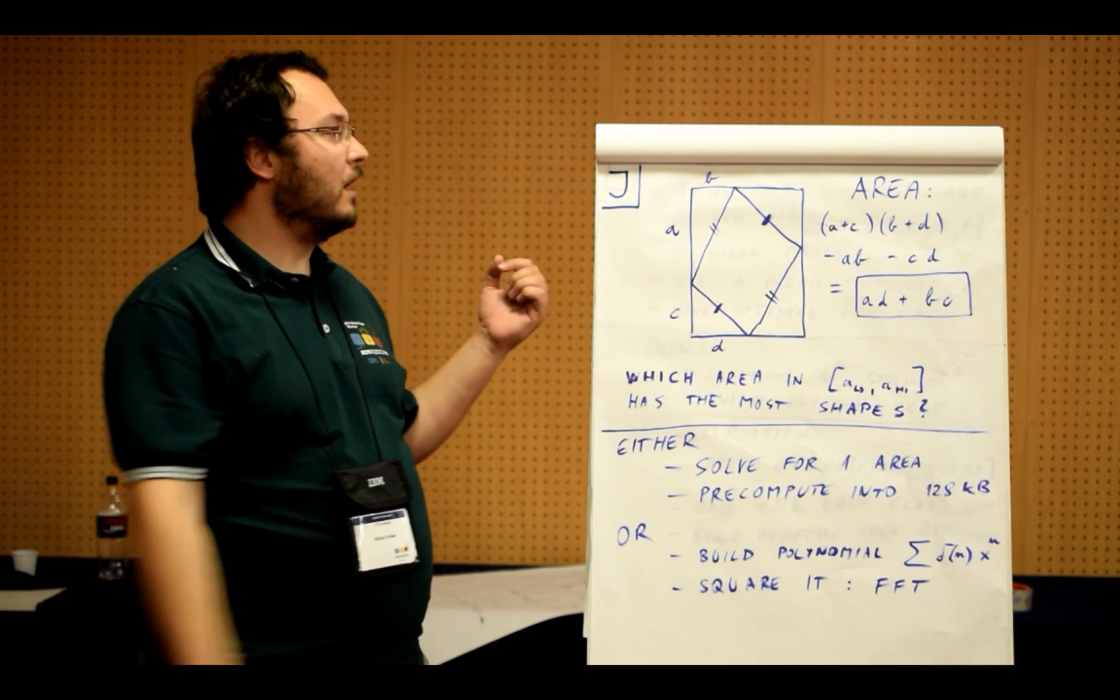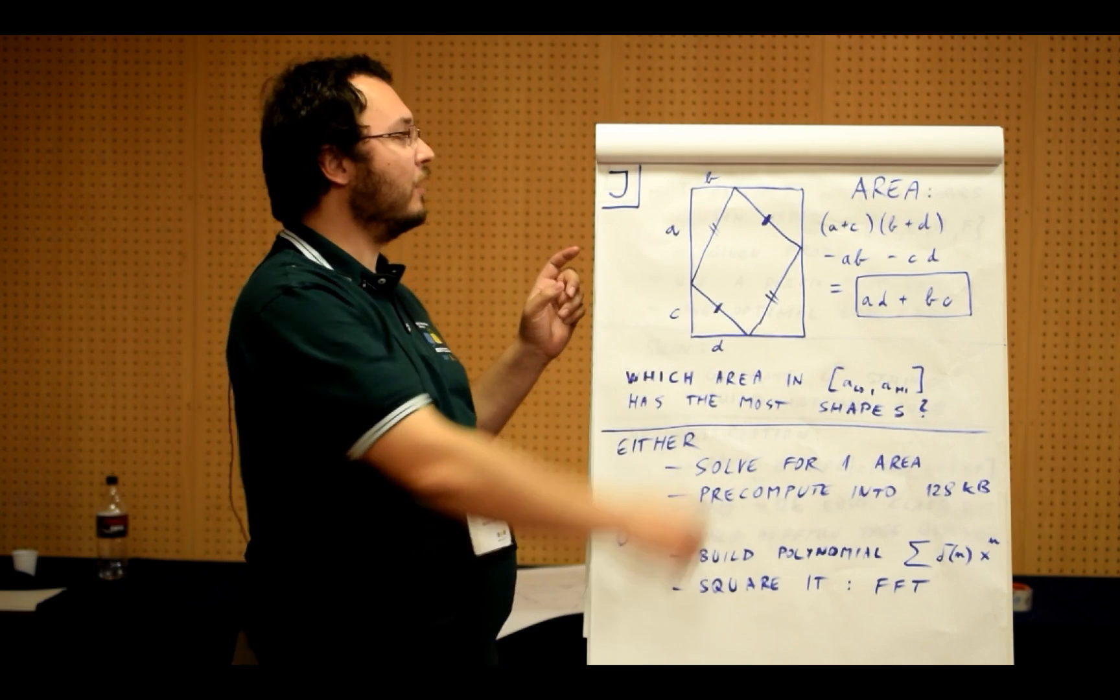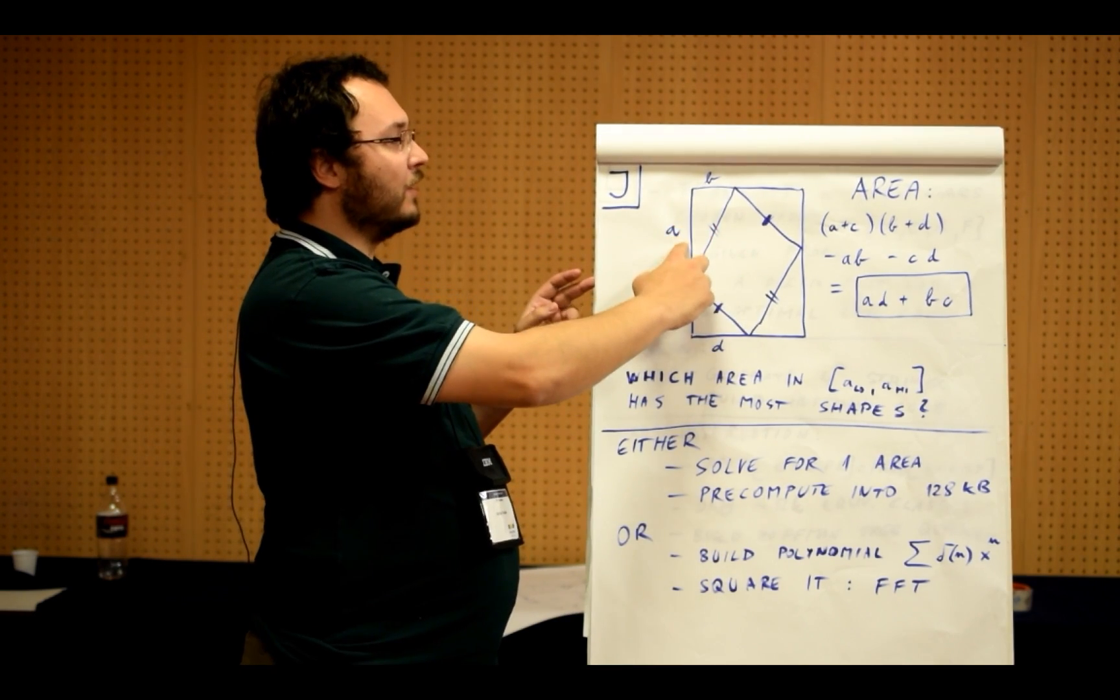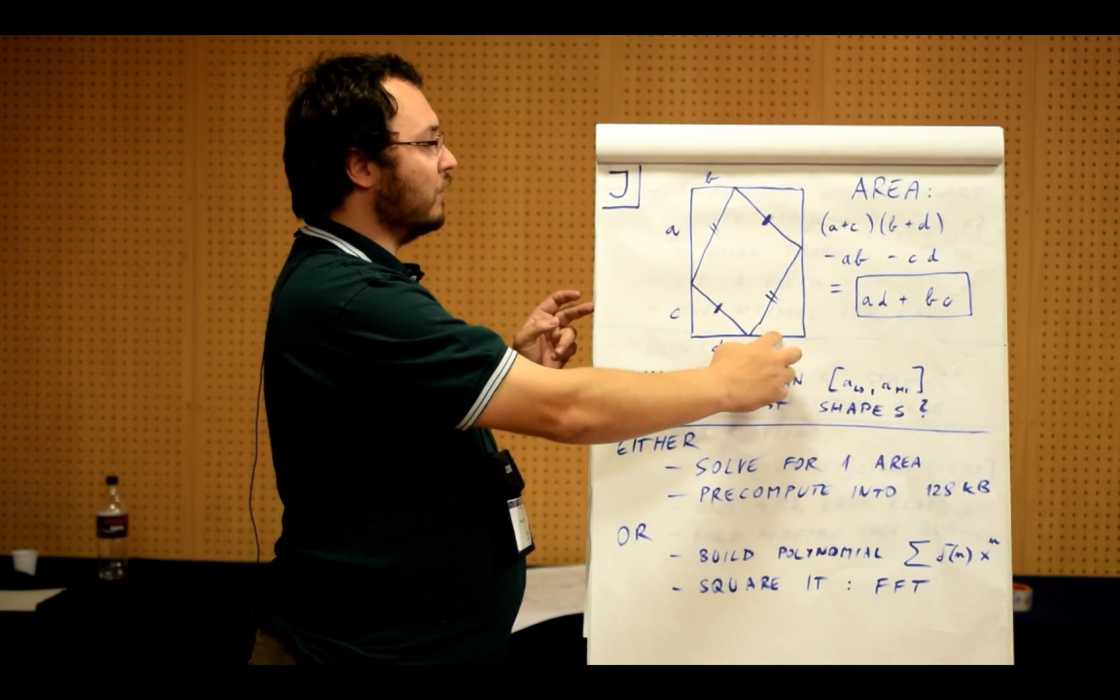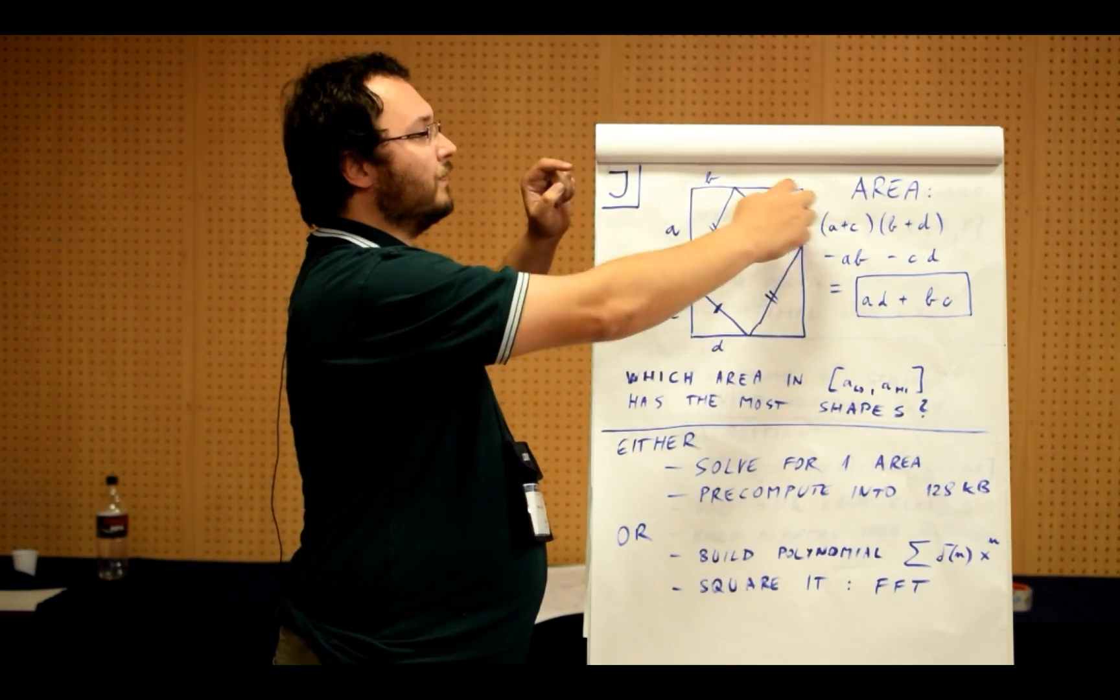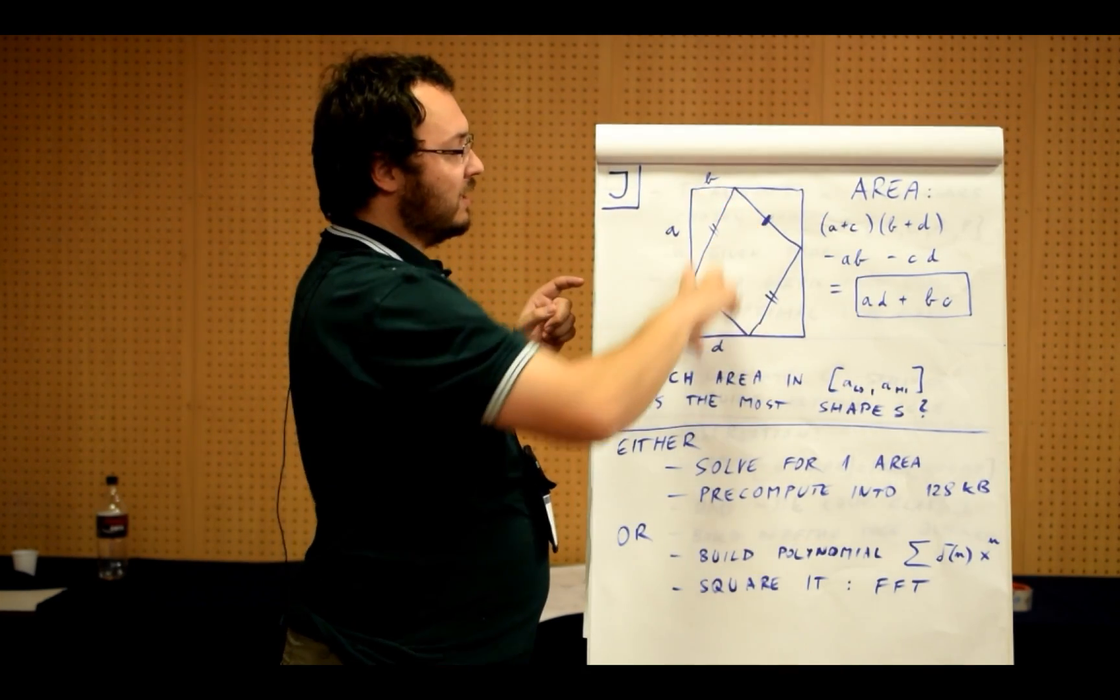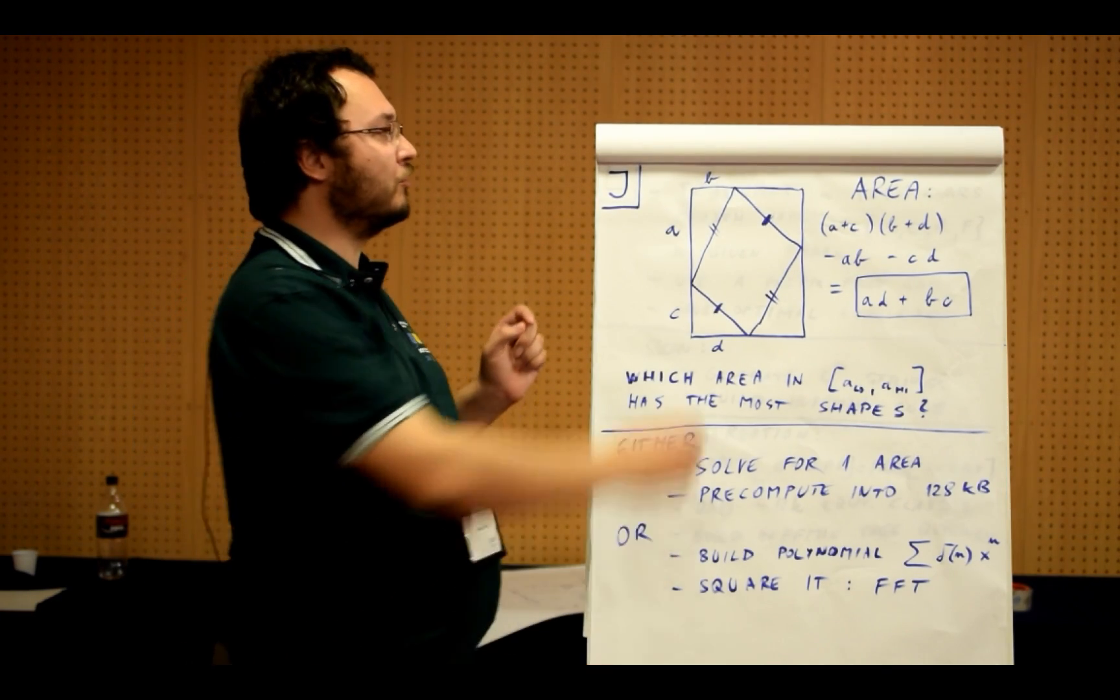So how to approach such a problem? The key observation is to write down a formula for the area as follows. Suppose we label the sides like this: a and b and c and d. Then this is also b, this is a, this is c and this is d. So this entire rectangle has the area (a + c) times (b + d), and now we have to subtract the triangles we are cutting off.